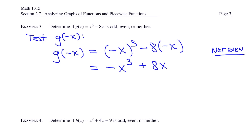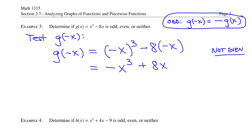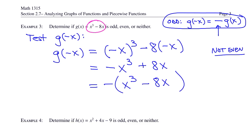Next, determine if the function is odd. If it is odd, g of negative x equals negative g of x. Factor out a negative from negative x cubed plus 8x, leaving x cubed minus 8x inside. That is the original g function. Since g of negative x equals negative g of x, we know that g is odd.